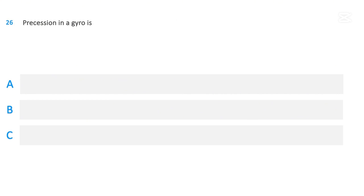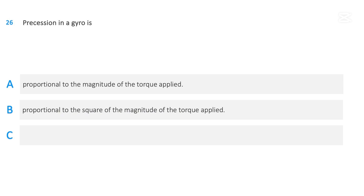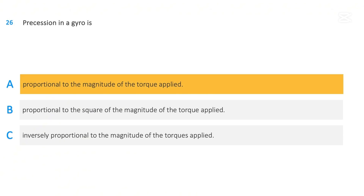Precession in a gyro is: proportional to the magnitude of the torque applied; proportional to the square of the magnitude of the torque applied; or inversely proportional to the magnitude of the torque applied. The correct answer is proportional to the magnitude of the torque applied.